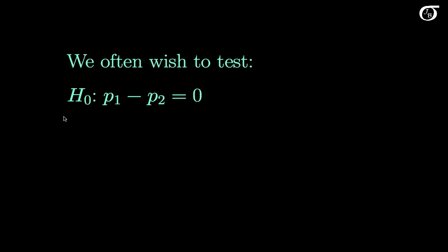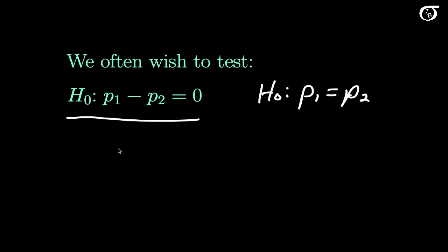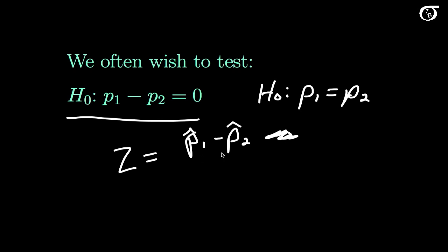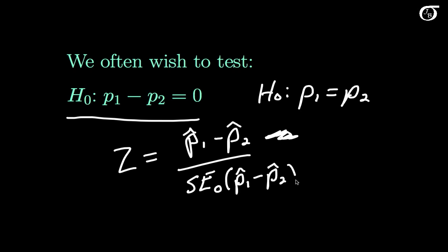Another common point of interest is testing the null hypothesis that the difference in population proportions is 0, or equivalently that the population proportions are equal. For large sample sizes we use a normal z-test. The test statistic z is the difference in sample proportions minus the hypothesized value — which is just 0 — divided by the standard error of the difference in sample proportions under the null hypothesis. This should look very similar to things we've done in the past.